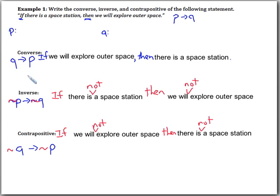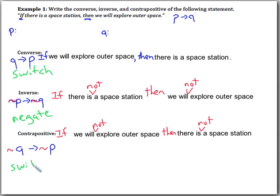So for the converse, all we had to do was switch. For the inverse, all we have to do is negate. And for the contrapositive, we just do both — we switch, negate, and negate.